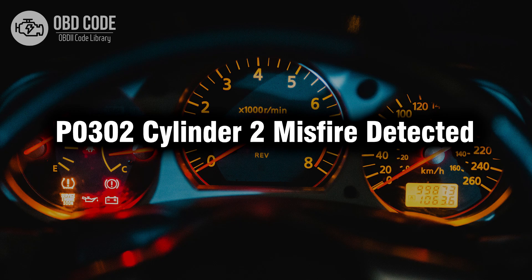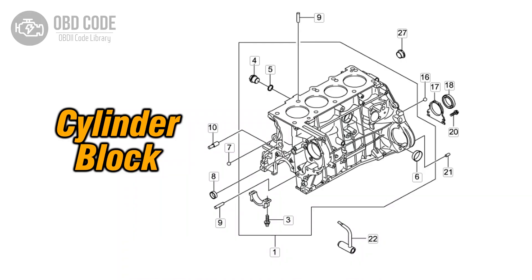Welcome. In this video we will talk about code P0302, its symptoms, causes and possible solutions. The P0302 trouble code is associated with Cylinder 2 misfire detected, indicating that there is a misfire specifically in Cylinder 2.